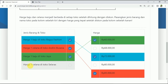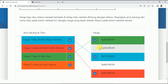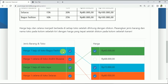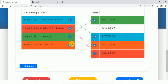Pernyataan terakhir: harga 1 celana di toko Selaras. Toko Selaras ini toko ketiga. Celananya yang warna hijau tadi 80 ribu. Berarti dijodohkan ke 80 ribu. Sekarang kita sudah menjawab soal menjodohkan ini.